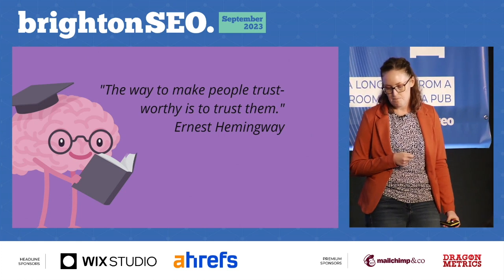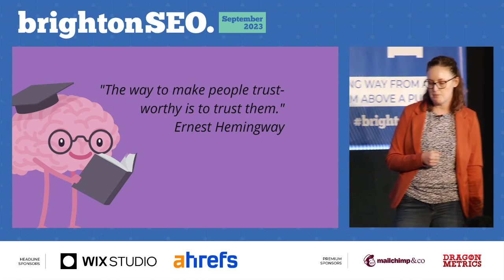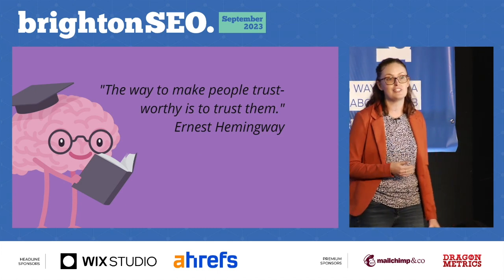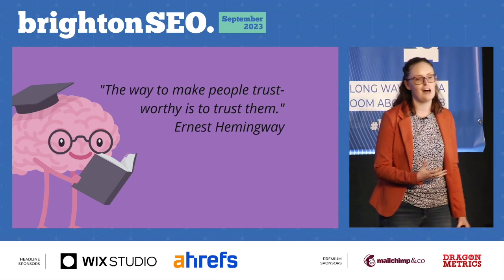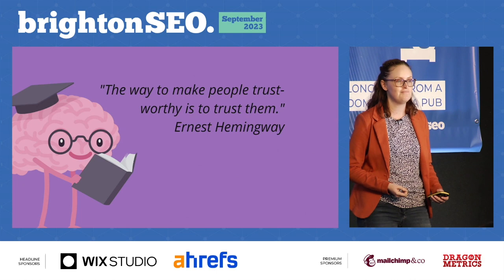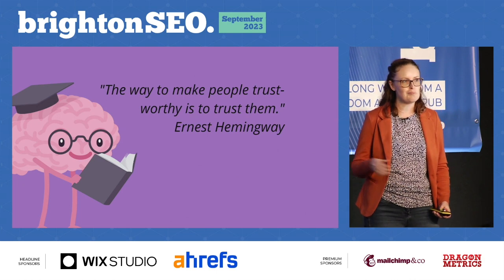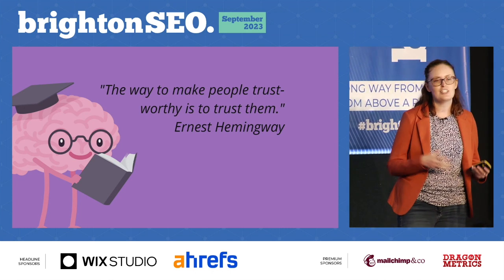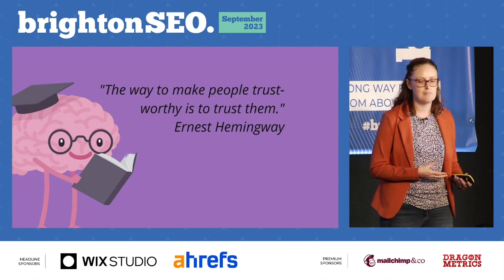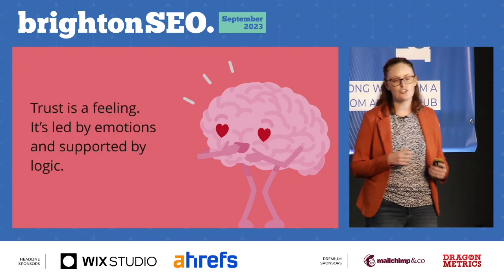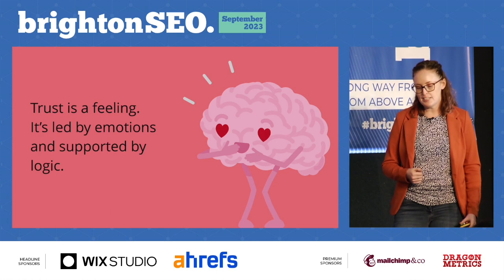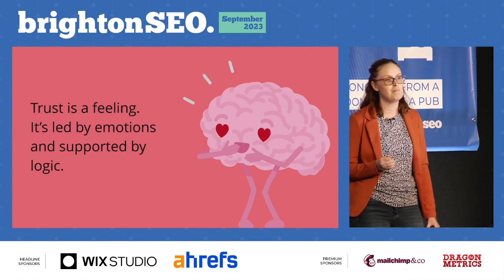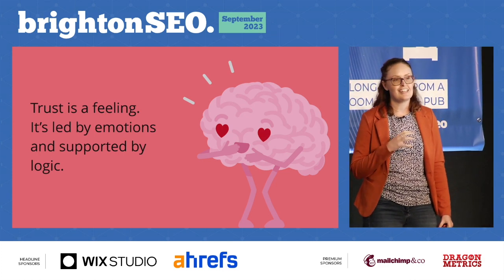But what is trust? Ernest Hemingway said that the way to make people trustworthy is to trust them. And that introduces the topic of conversational intelligence — that you have to give something up in order for other people to be able to trust you. Trust can be quite a hard thing to put down on paper, because trust is a feeling. It's led by emotions and supported by logic. This is a really important concept to remember: trust is a feeling.